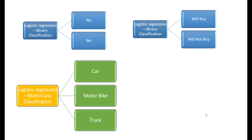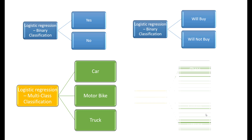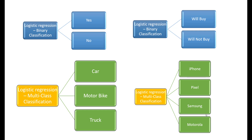This video is about building a logistic regression model that does multi-class classification, where the model can predict three or more possible outcomes. For example, based on input attributes, the model can predict whether a vehicle is a car, a motorbike, or a truck. Or it can predict whether a phone is an iPhone, a Google Pixel, a Samsung, or a Motorola. These are examples of multi-class logistic regression.